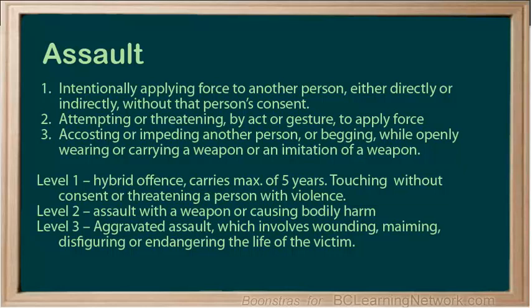The Criminal Code classifies assault according to three levels of severity. Level one is a hybrid offence carrying a maximum of five years — this is touching without consent or threatening a person with violence. Level two is assault with a weapon or causing bodily harm, injuring a person in a way that has serious consequences for that victim's health or comfort. Level three is aggravated assault, which involves wounding, maiming, disfiguring, or endangering the life of the victim.